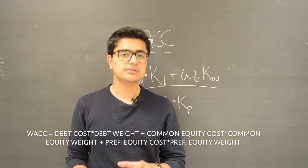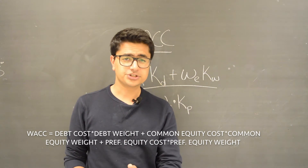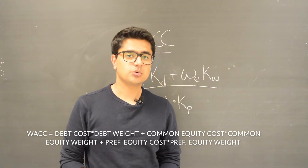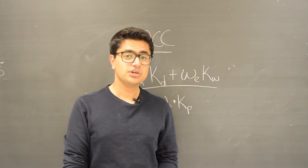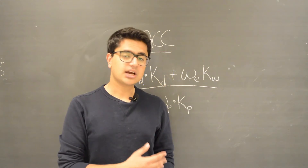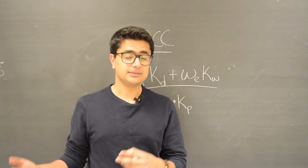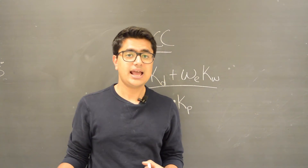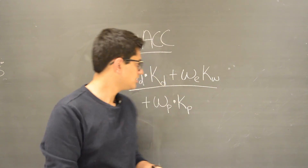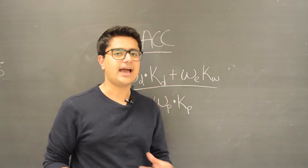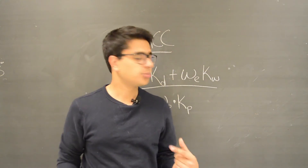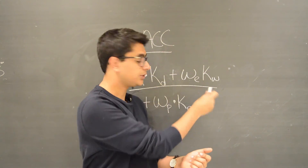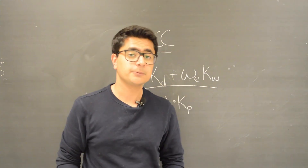This is most important in application when you're valuing companies. When you do a discounted cash flow analysis, the value of a company is the present value of all its future cash flows. When you discount those future cash flows, you discount them at the weighted average cost of capital, since it incorporates the cost of debt, the cost of common equity, and the cost of preferred equity.